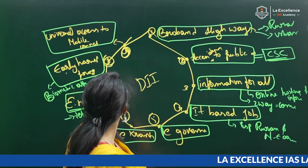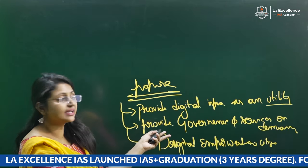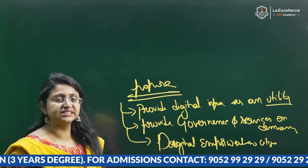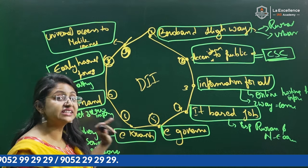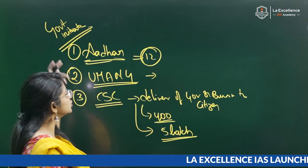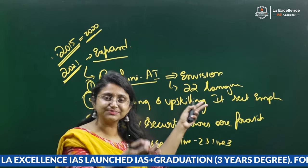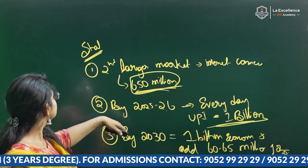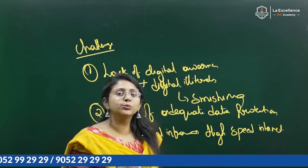Let us revise today's class. We discussed the Digital India Mission, when it was launched, and its purpose — to provide digital infrastructure as a utility, governance and service delivery on demand, and digital empowerment of citizens. The nine pillars are: broadband highways, access to internet, information for all, IT-based jobs, e-governance, e-Kranti, e-manufacturing, early harvest programs, and universal access to mobile communications. Government initiatives include Aadhaar, Umang, Common Service Centers, Meri Pehchan, and BBPS. After 2021, the program expanded to include Bhashini AI, reskilling and upskilling of the IT sector, and more. Finally, we covered the statistics showing the scope of improvement and the challenges plaguing the digital infrastructure.